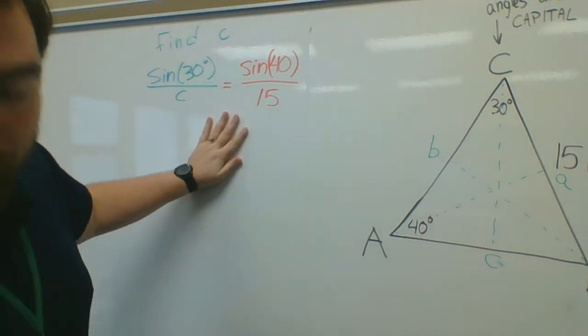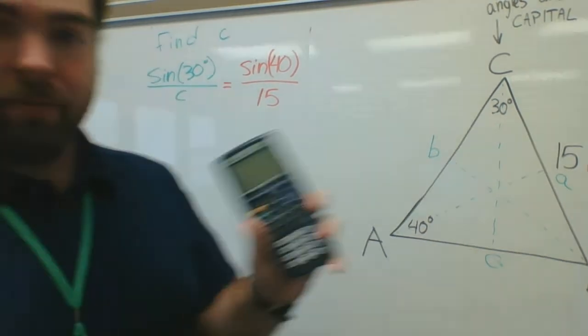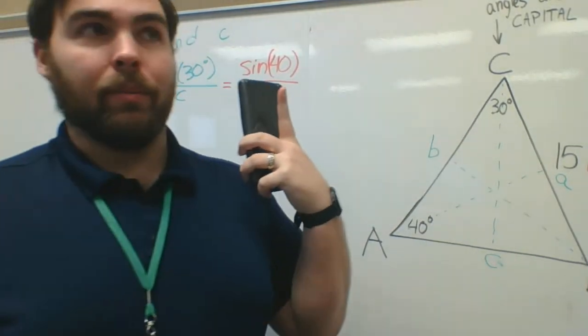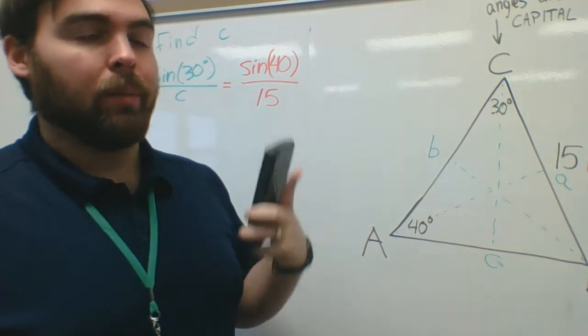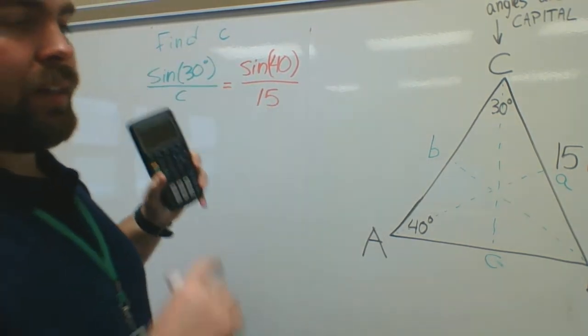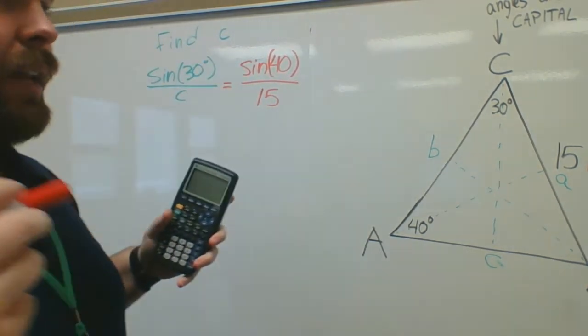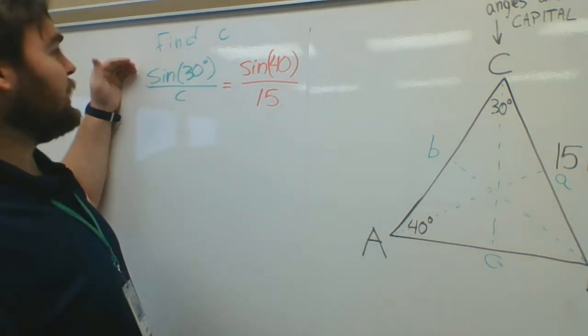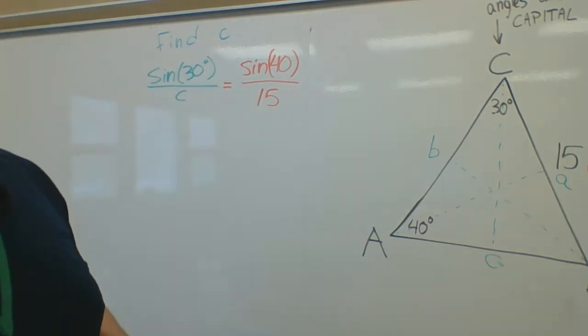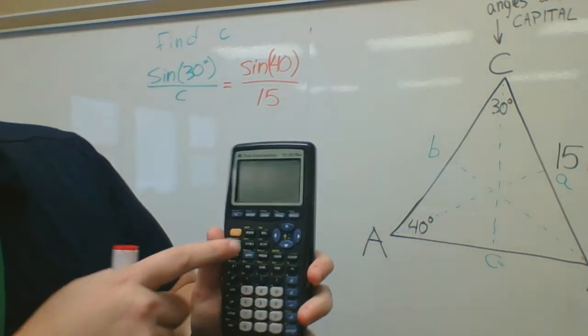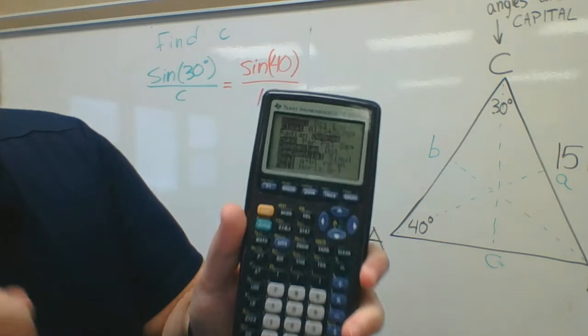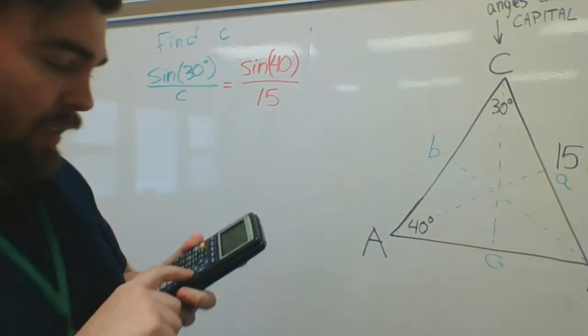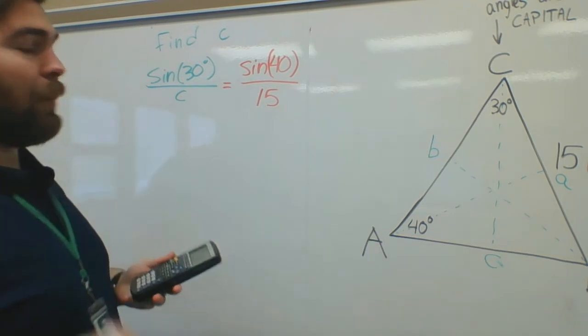So what you're going to do is get a calculator out. Now, if you have a graphing calculator, I'd use that. If you don't, I'm going to put a link on your Google Classroom. It's going to have the Desmos graphing calculator, and that'll be pretty self-explanatory. So what I'm going to do is I'm going to figure out what sine of 30 degrees and sine of 40 degrees are. Now, if you use a graphing calculator, I'm going to check the mode first and see that it's on degrees and not radians. We'll talk about radians in a few chapters. But for right now, make sure it's on degrees.